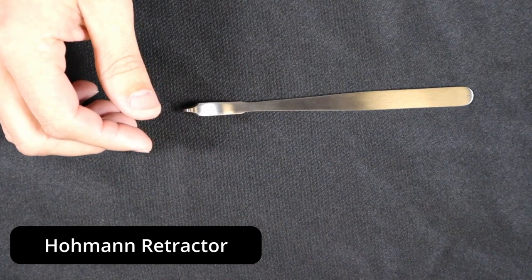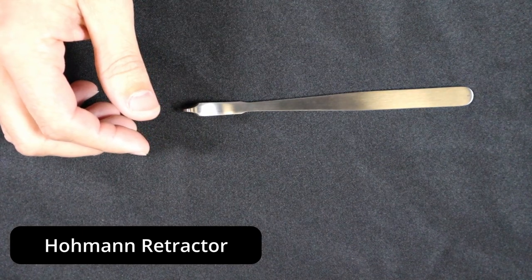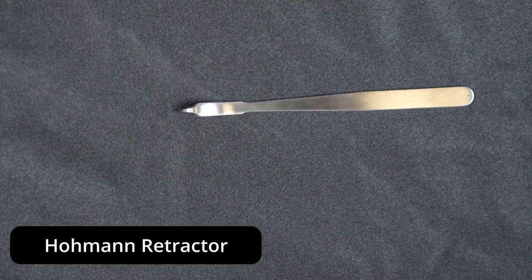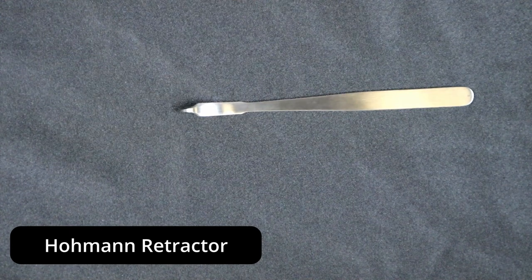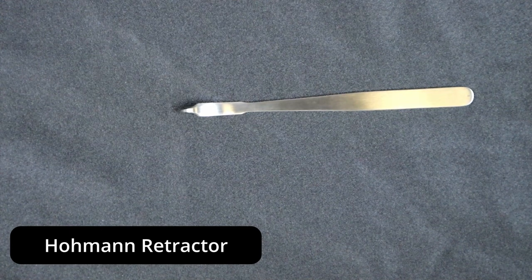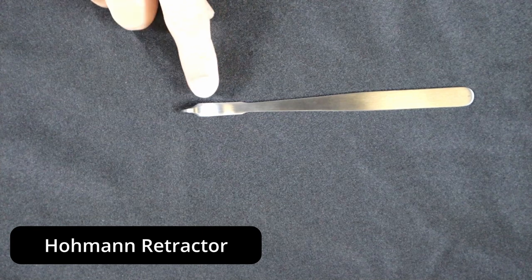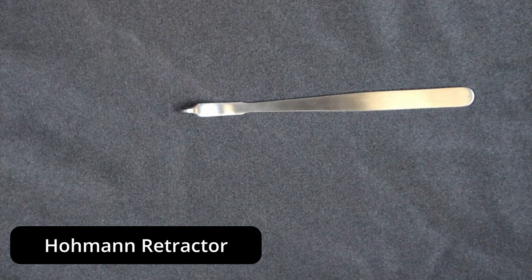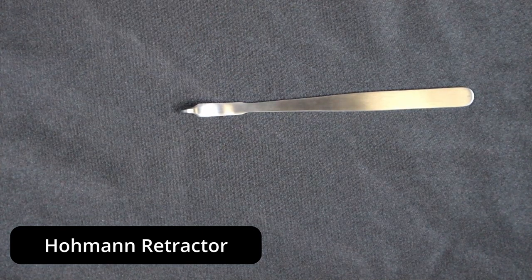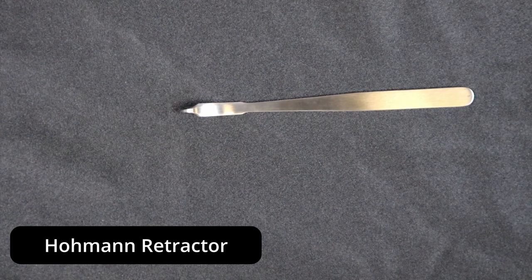You'll often see these in your orthopedic trays, and this instrument is used for exposing bone during procedure. You've got a broad flat blade with a curved profile that makes insertion and exposure easier for the surgeon.